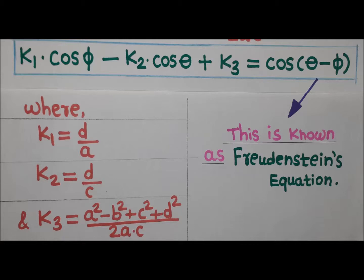In Freudenstein's equation: theta is the angle turned by the input link, phi is the angle turned by the output link, 'a' is the length of the input link, 'b' is the length of the coupler, 'c' is the length of the output link, and 'd' is the length of the fixed link.